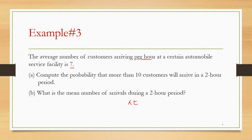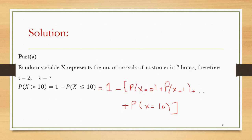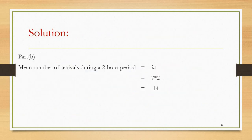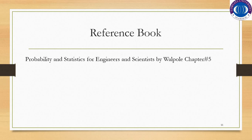In part b, they ask for the mean number of arrivals during a two-hour period. The mean of the Poisson distribution is lambda times t. With lambda equals seven and t equals two, the mean equals 14. So on average, 14 arrivals will occur during a two-hour period. Thank you for listening.